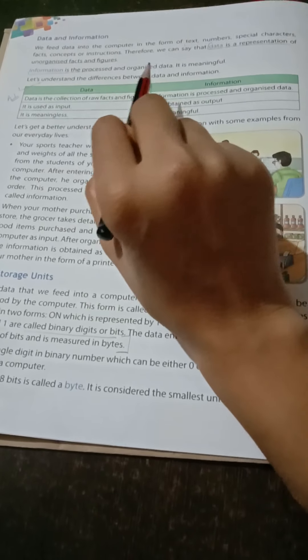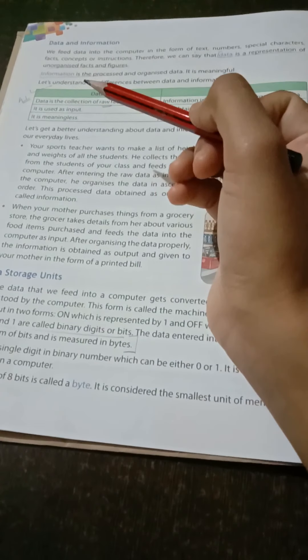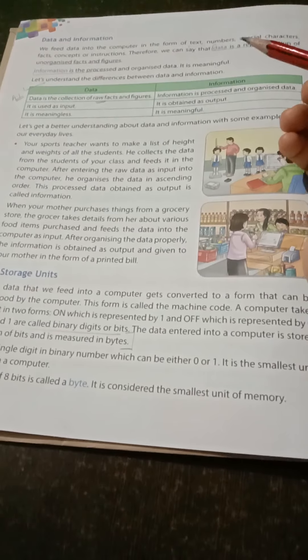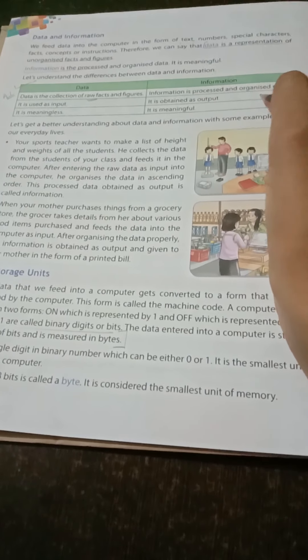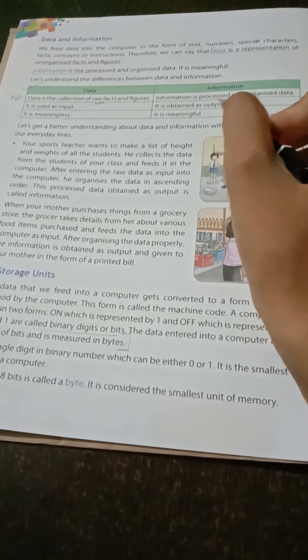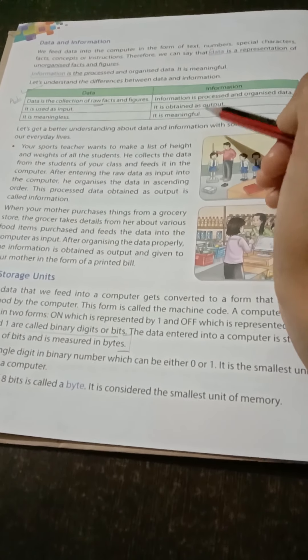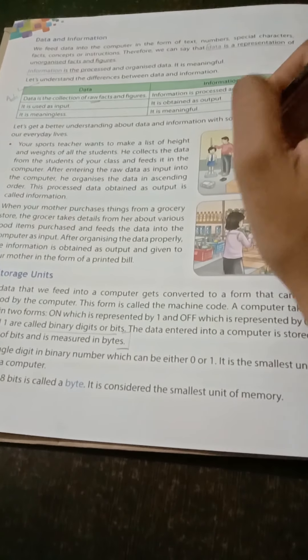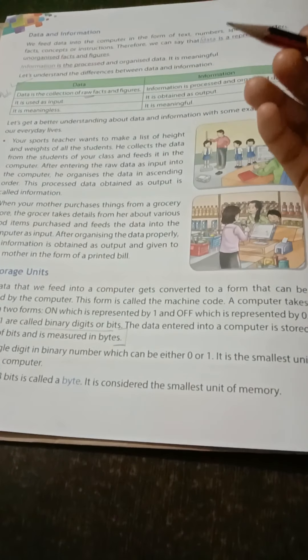Let us understand the difference between data and information. What is the first difference? Data is the collection of raw facts and figures. Raw means furnished nahi hota hai — randomly hum collect karke aate hai. And information is processed and organized data — bohot properly collect kia jata hai, uska har cheez ka meaning hota hai. Every word has a meaning.